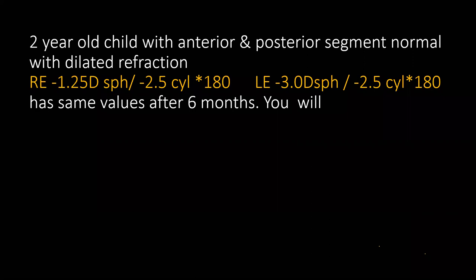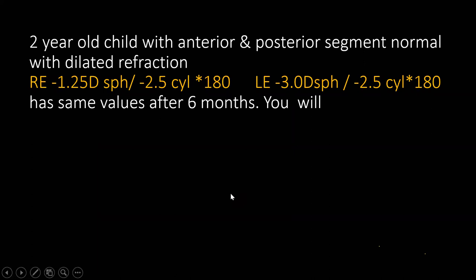Case 4: A two-year-old with normal anterior and posterior segment. Dilated refraction — right eye plus 1.25 sphere / plus 2.5 cyl at 180; left eye minus 3 sphere / minus 2.5 cyl at 180. The same values confirmed at six-month repeat visit. Decision: prescribe glasses. The cylinder is very significant, the readings have been confirmed over six months with no change, so glasses should be given.